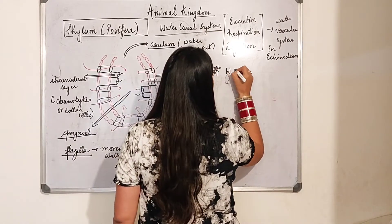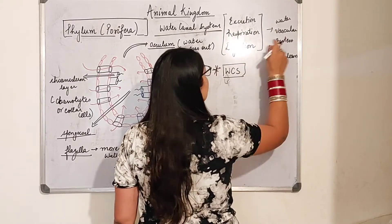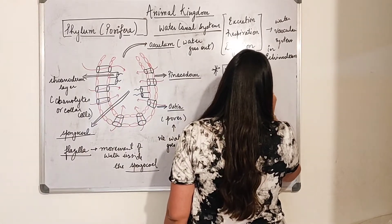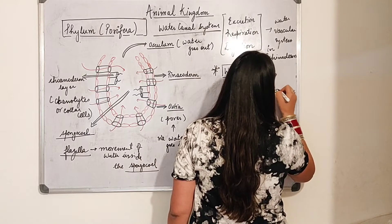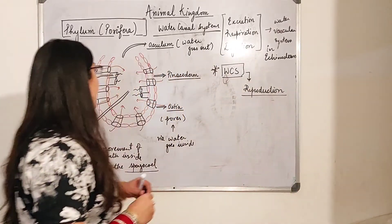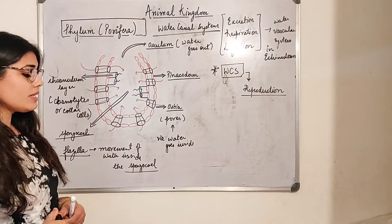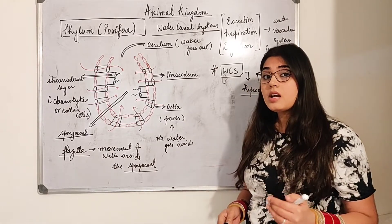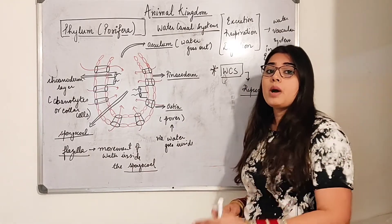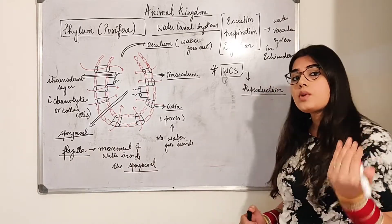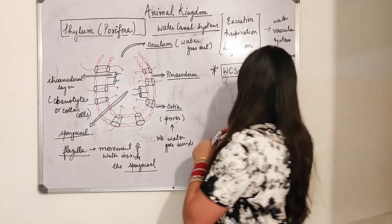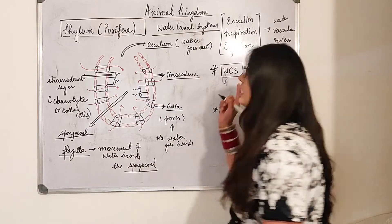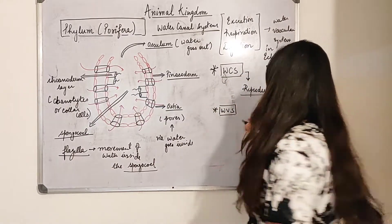The exclusive function which only the water canal system can perform — and the water vascular system cannot — is reproduction. Reproduction is possible because they have flagella, and due to the flagella, movement of water takes place. Due to the movement of water, the gametes are also carried from one path to another, making the reproduction process possible. The exclusive feature of the water vascular system which the water canal system cannot do is locomotion — it has tube feet that help in locomotion.